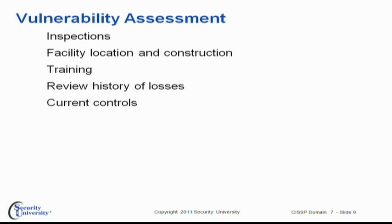Where do we start? Doing a vulnerability assessment. We need to inspect the buildings on a regular basis and everything that's in them. We need to reassess the facility location, especially if you're planning on moving. We want to make sure everybody's properly trained. We also need to be aware of the history of losses — this ties into actuarial statistics discussed in the first chapter — and what are the current controls, and what might be some additional controls we need to deploy as a result of doing these assessments.